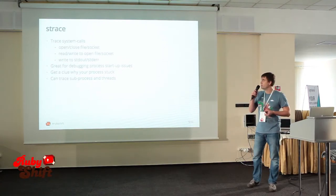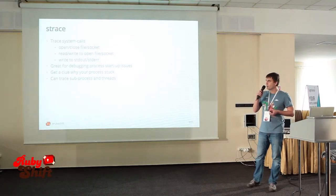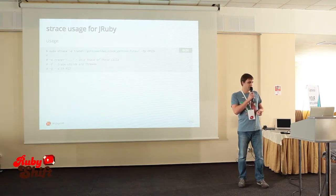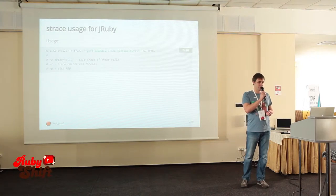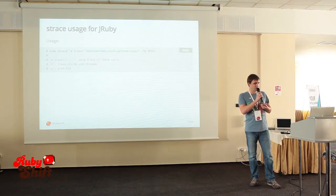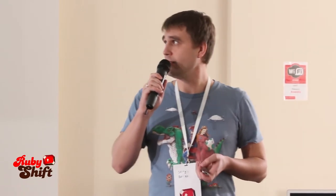Let's discuss strace. Strace is the most powerful debugging tool for Unix because it allows you to get a clue about what your process is doing and how it asks for different operations from the kernel. All kinds of I/O activity go through strace and you can easily observe it. Here is how you can use strace for JRuby — it should be used in this way because with the -e flag you can filter out noisy system calls, and with -f you can trace child threads. This is very important for JRuby.